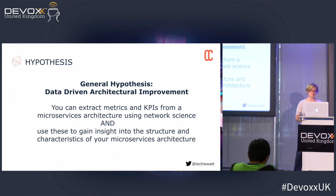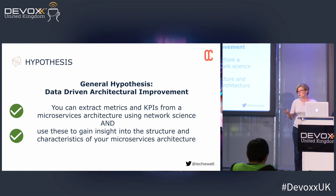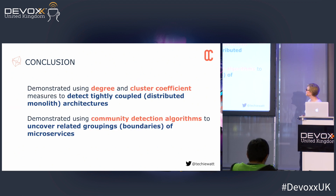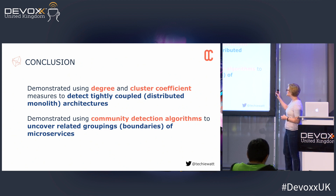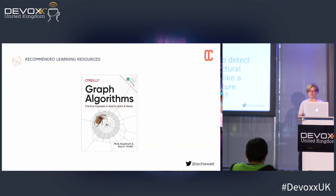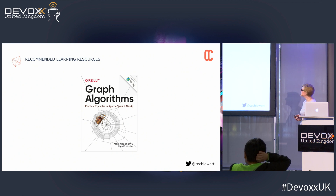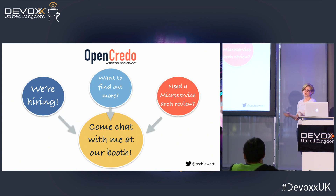So the summary is simple. The general hypothesis was that it's possible to start doing data-driven architectural improvements, and I think we've demonstrated that. You can extract metrics using network science and use that to gain insight into your architecture. We specifically looked at degree and cluster coefficient as a way to detect tightly coupled architectures, and we used community detection algorithms to uncover related groupings of boundaries or microservices. We did detect some anti-patterns. This is a great book if you're interested in getting more into this — by Mark Needham and Amy Hodler. We're also hiring, so please come and chat, or if you want a microservice architecture review. Thanks very much.